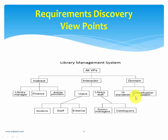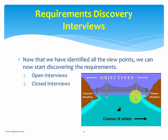Now, how do you actually get the requirements? You understood that stakeholders give requirements and requirements can be categorized into viewpoints — but the question is how do you get them. If you want a requirement from a stakeholder, you have to go and interview them. The process of discovering the requirements from a stakeholder is called requirements discovery, and one such way of doing that is called an interview.